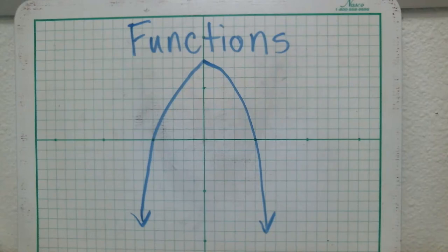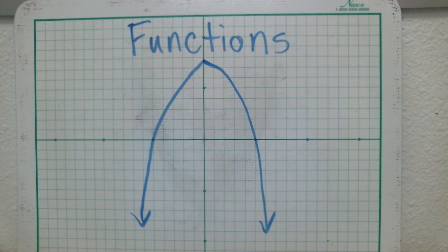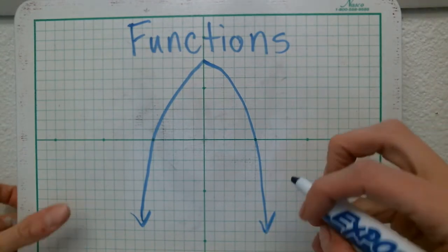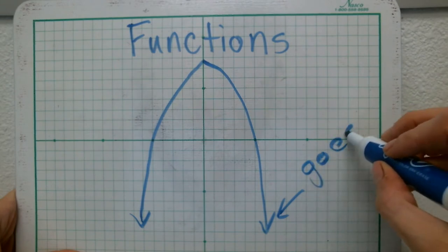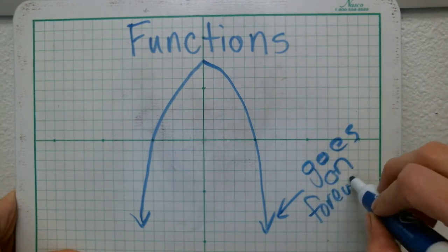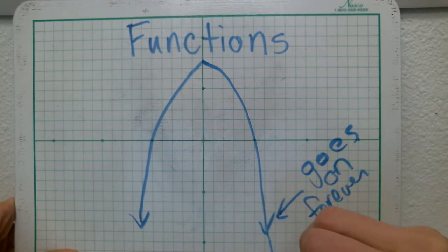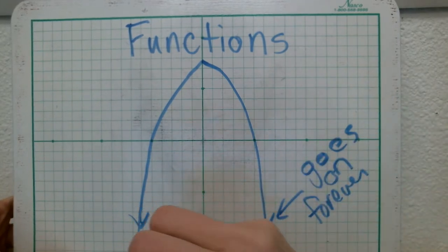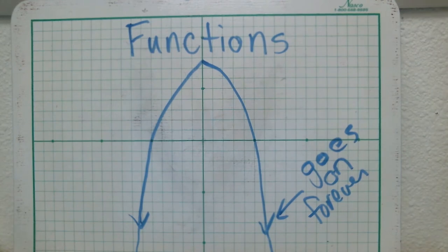The topic for today is functions. In our last video, we learned about quadratics. The shape on the screen right now is a quadratic called a parabola. This parabola is also what we call a function. You see how there are arrows at the end — arrows mean that something goes on forever. It's not a straight line, but slightly curved going down and out. Using this quadratic, we're going to start a discussion on functions.